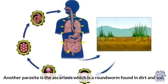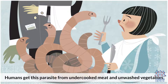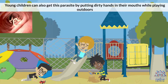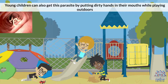Another parasite is Ascariasis, which is a roundworm found in dirt and soil. Humans get this parasite from undercooked meat and unwashed vegetables. Young children can also get this parasite by putting dirty hands in their mouths while playing outdoors.